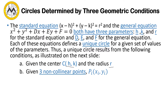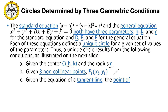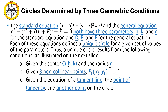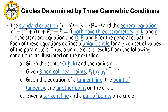Another condition is solving the equation using three non-collinear points p(x, y), so we can have p1(x1, y1), p2(x2, y2), and p3(x3, y3). Third, we can have the given equation of a tangent line and a point of tangency, and another point on the circle. And the fourth condition is a tangent line and a pair of points on the circle.